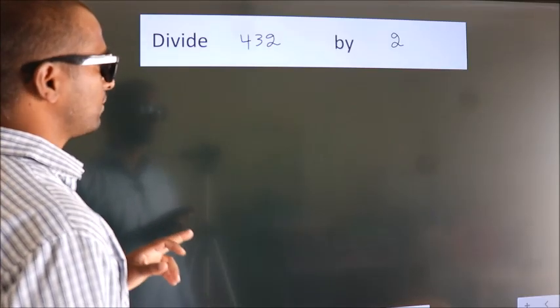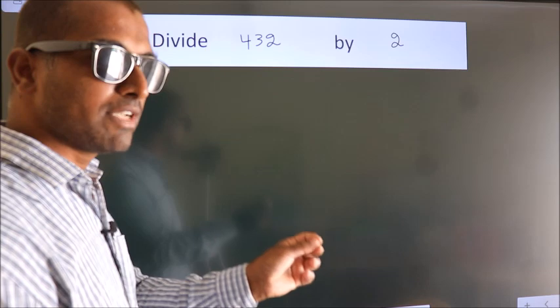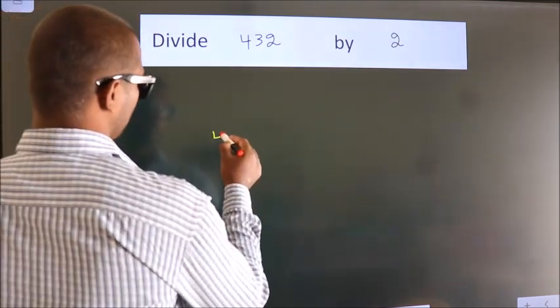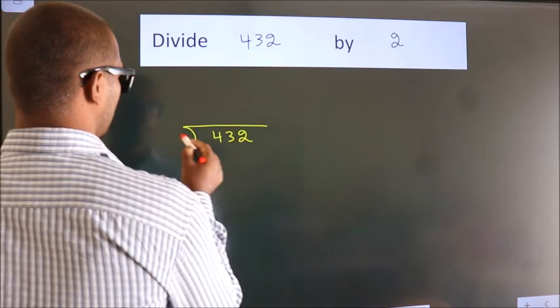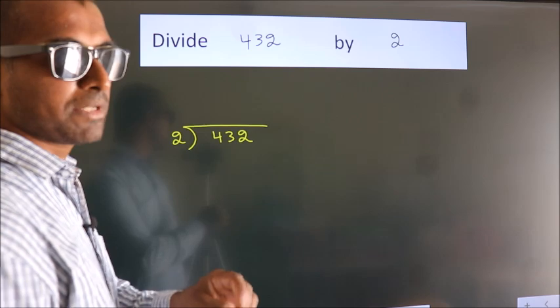Divide 432 by 2. To do this division we should frame it in this way. 432 here, 2 here. This is your step 1.